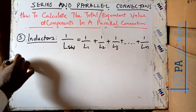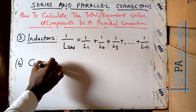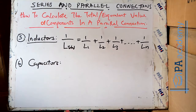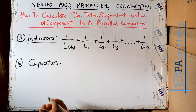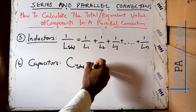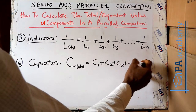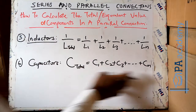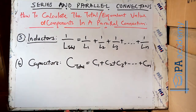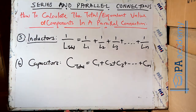Let's look at one more — capacitors. If you are having capacitors in a parallel connection, how do you get the equivalent value? This one is simple: C_total is equal to C1 plus C2 plus C3, and so on — just add them. It is the sum of the individual capacitance values of each capacitor.